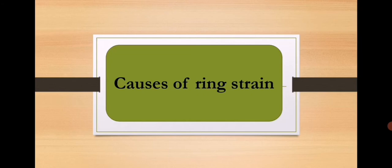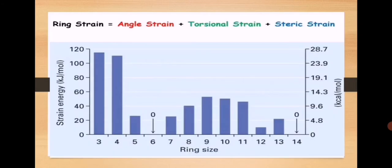In our previous lecture, we have completely understood the concept of ring strain. In today's lecture, we will see the reasons why ring strain occurs. There are three reasons for ring strain: angle strain, torsional strain, and steric strain. These three kinds of strain cause ring strain. We will discuss them one by one. Steric strain can also be called non-bonded interaction.